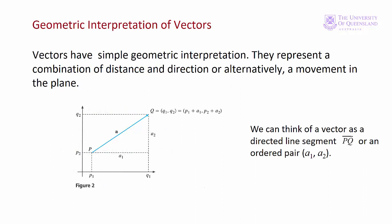Vectors can have a geometric interpretation that's widely used in many branches of maths. A vector has both magnitude and direction. So vector A has a length from there to there and it's pointing in a particular direction. We can think of it as a movement in the plane, in this case the XY plane.